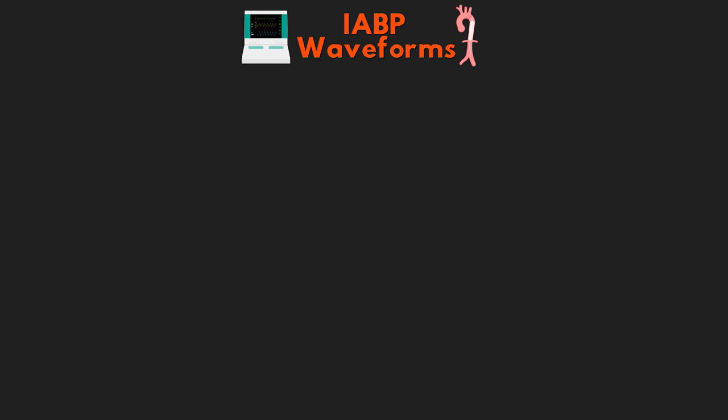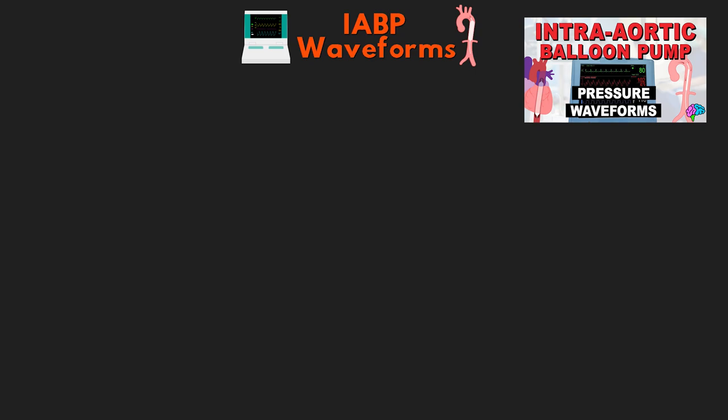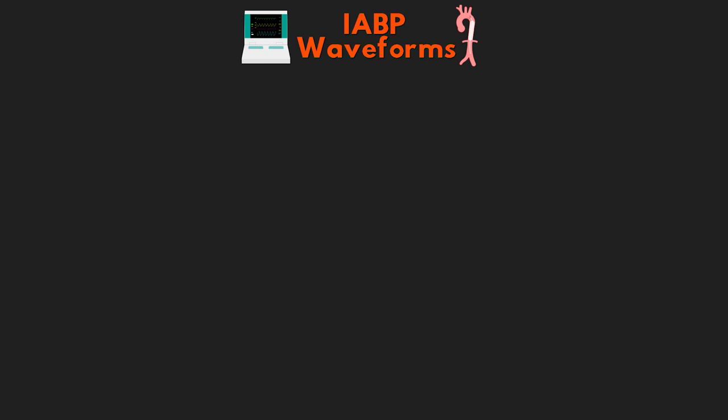With that out of the way, let's get started. That previous lesson was a deep dive into the changes we see as a result of the different pressures going on with our balloon pump in operation. It's really important that you understand those pressures and what you expect to see, because in this lesson we're going to build on that and distinguish some errors that come up or some lack of ideal augmentation. You really need that foundational understanding before getting into this. So let's start by talking about the different triggers we have for our balloon pump.